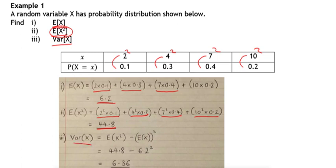Now if we want the variance, using the second of the two formulas mentioned, we can do the expected value of x squared, 44.8, take away our mean squared, 6.2 squared, to give us 6.36.